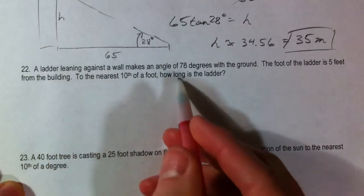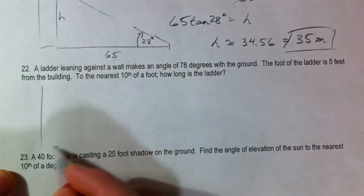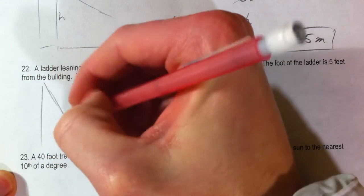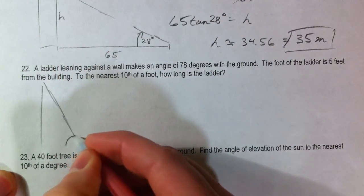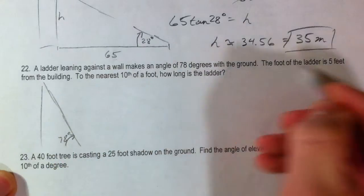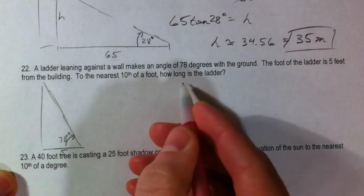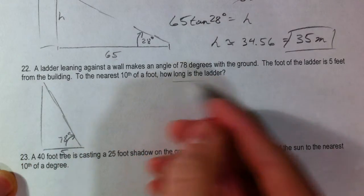Ladder leaning against a wall makes an angle of 78 degrees with the ground. So we've got a ladder, same kind of deal, but it's pretty steep, 78 degrees, making with the ground. The foot of the ladder is 5 feet away from the building to the nearest tenth of a foot. How long is the ladder?